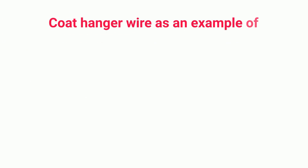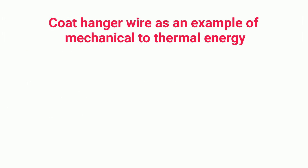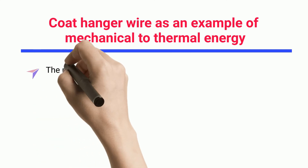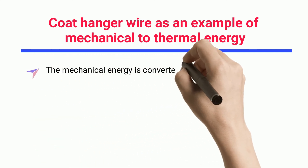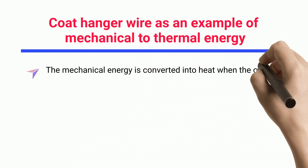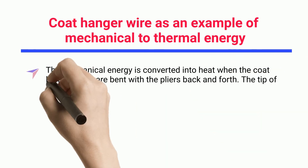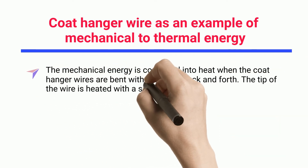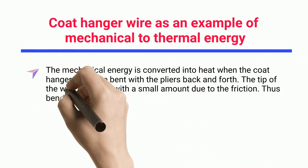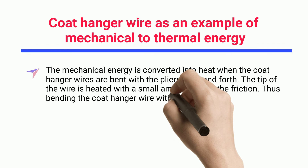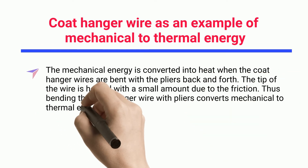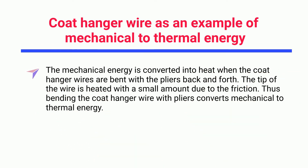Coat hanger wire as an example of mechanical to thermal energy. Mechanical energy is converted into heat when coat hanger wires are bent back and forth with pliers. The tip of the wire becomes heated due to friction. Thus bending the coat hanger wire with pliers converts mechanical energy into thermal energy.